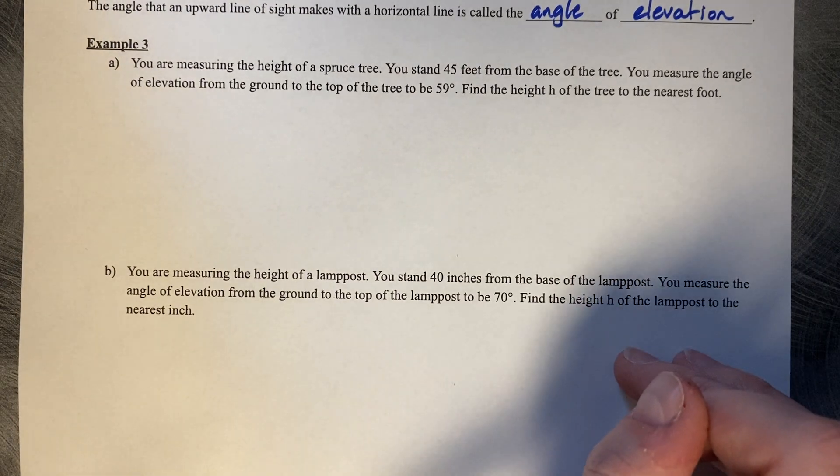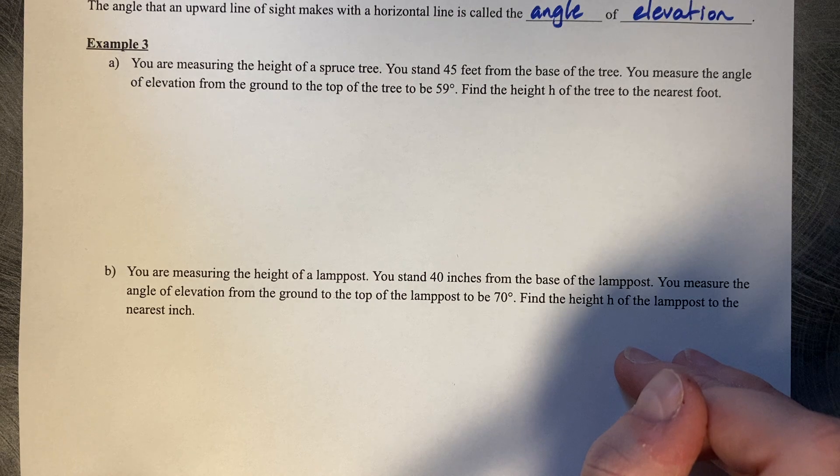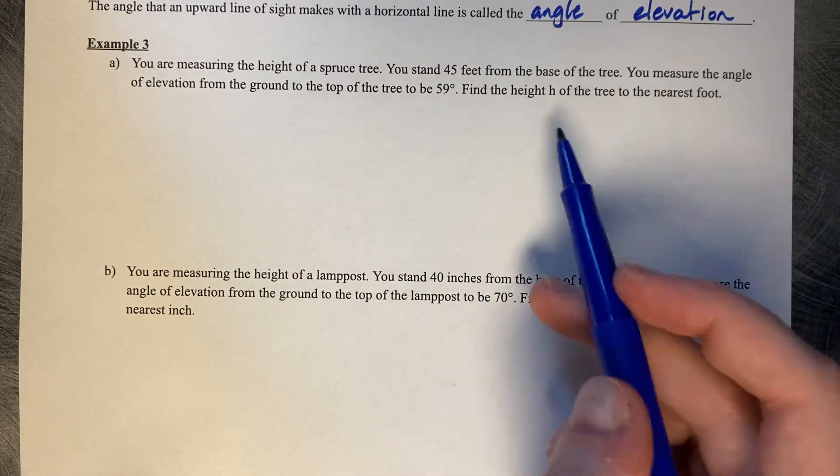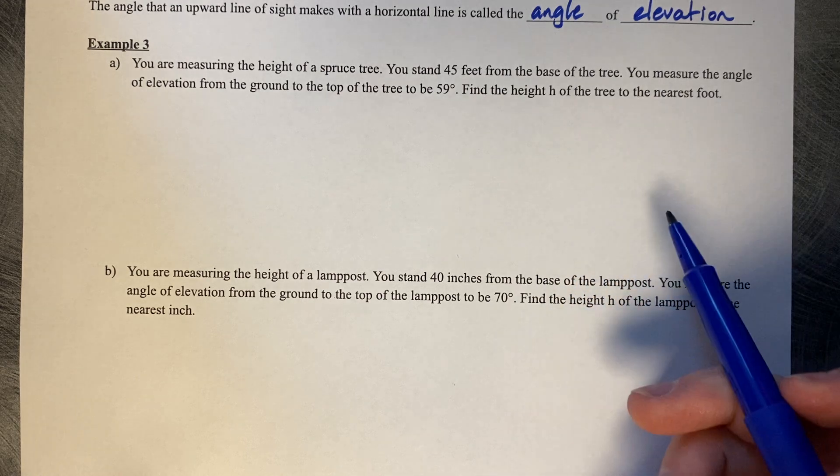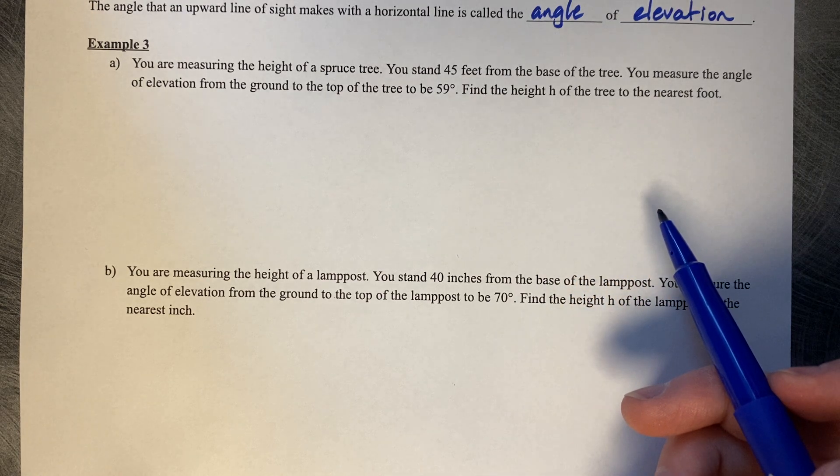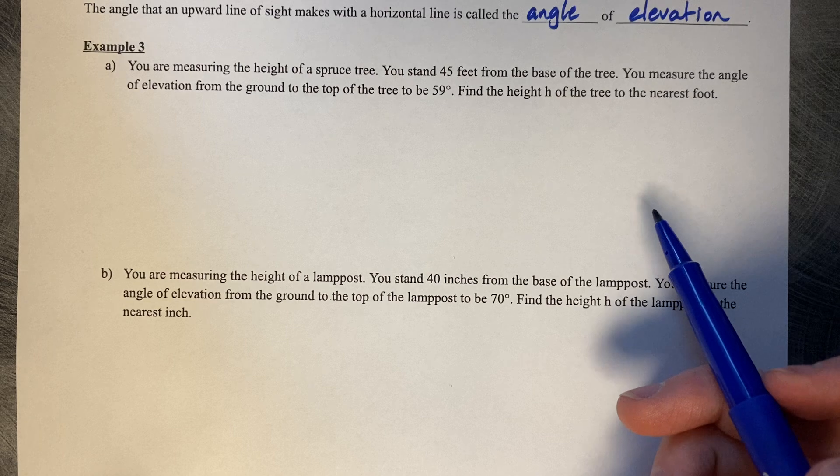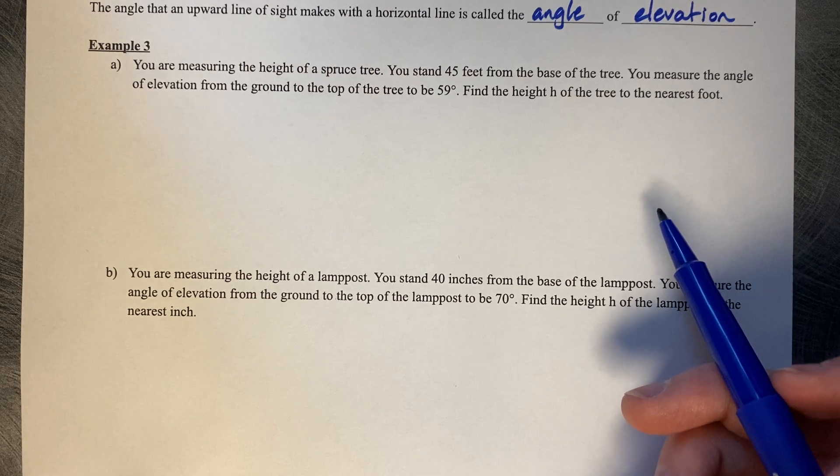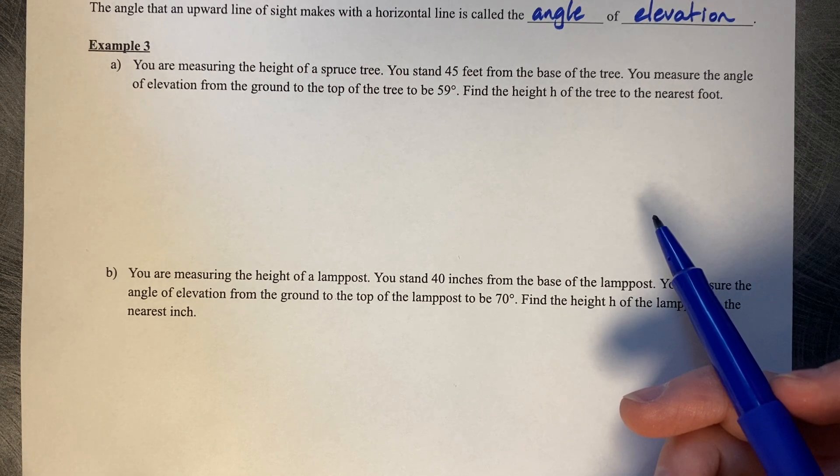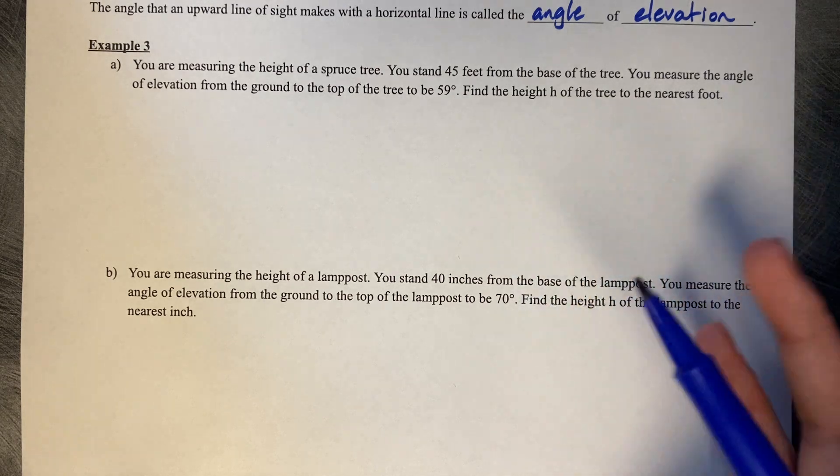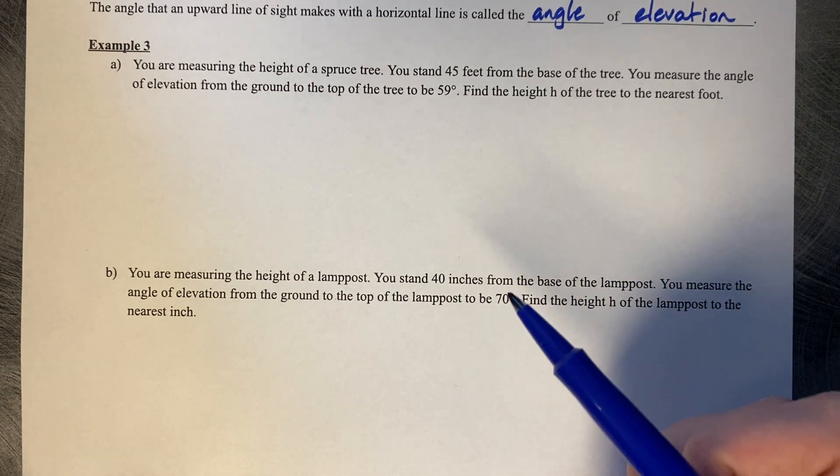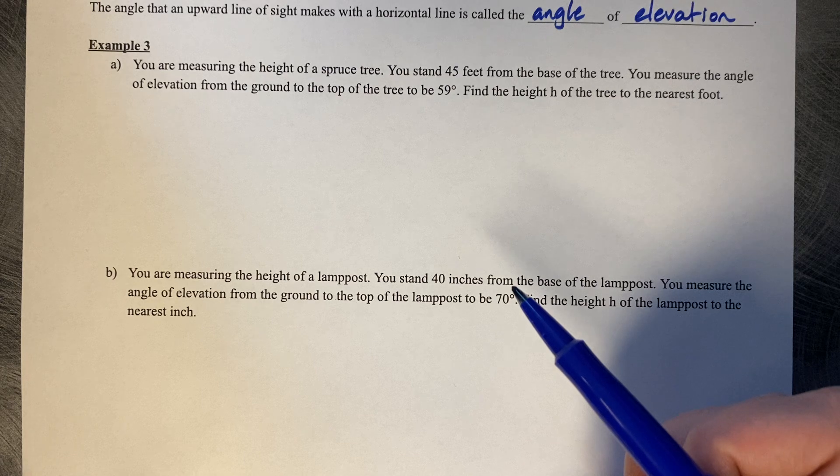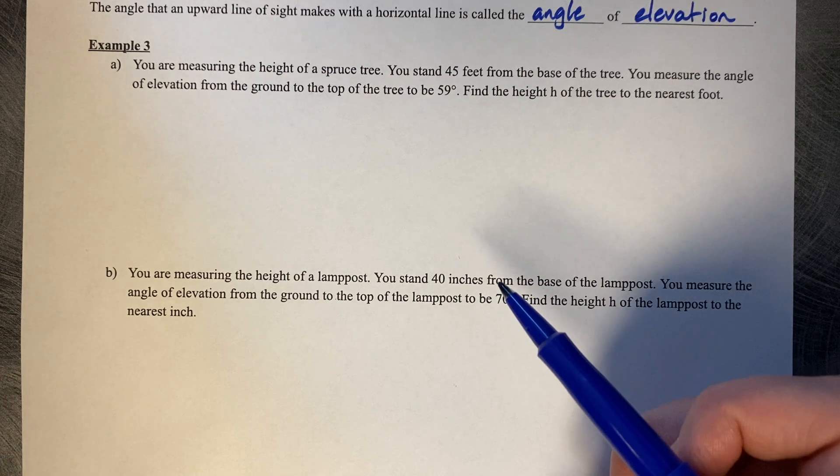You're measuring the height of a spruce tree. You stand 45 feet from the base of the tree. You measure the angle of elevation from the ground to the top of the tree to be 59 degrees. Find the height h of the tree to the nearest foot. This is called indirect measurement, using trigonometry to measure things that might be too tall to measure using yardsticks or measuring tape.